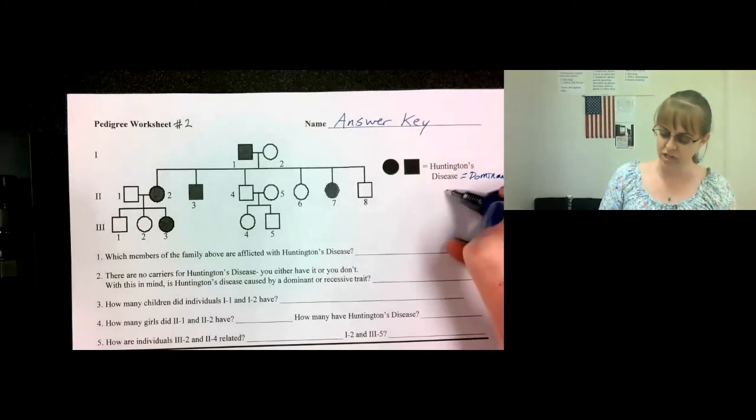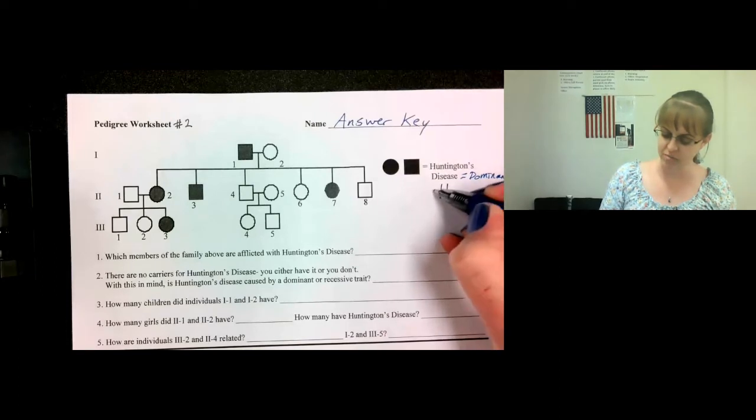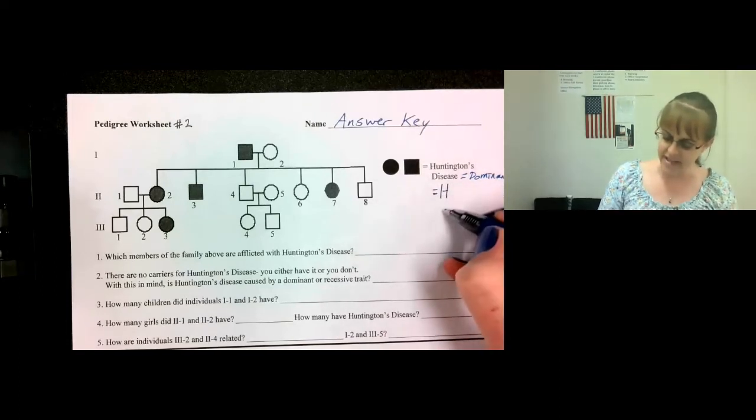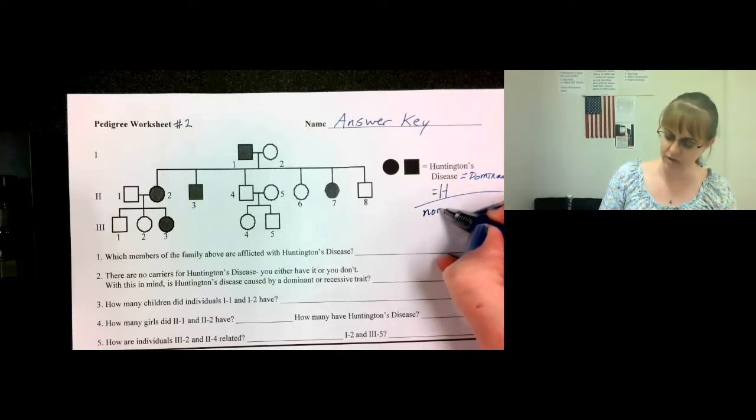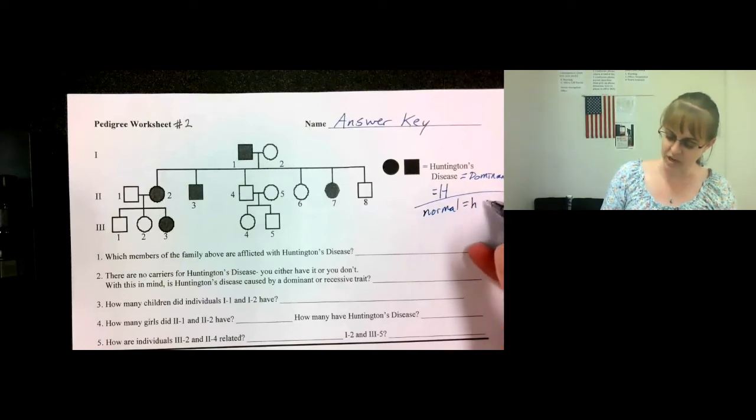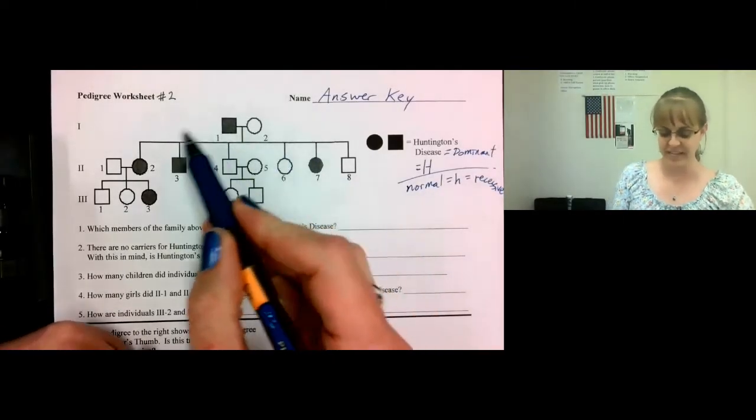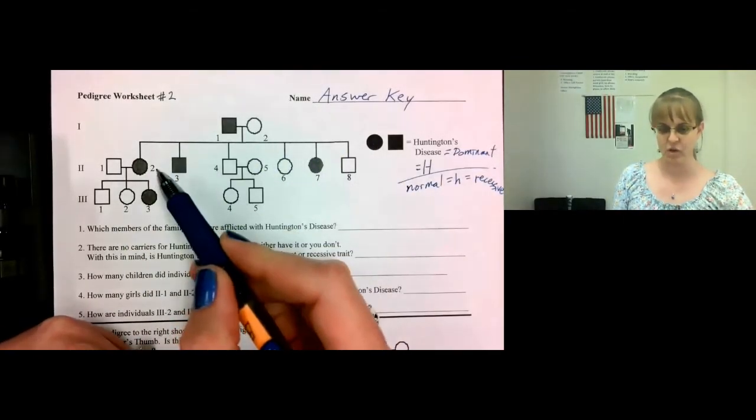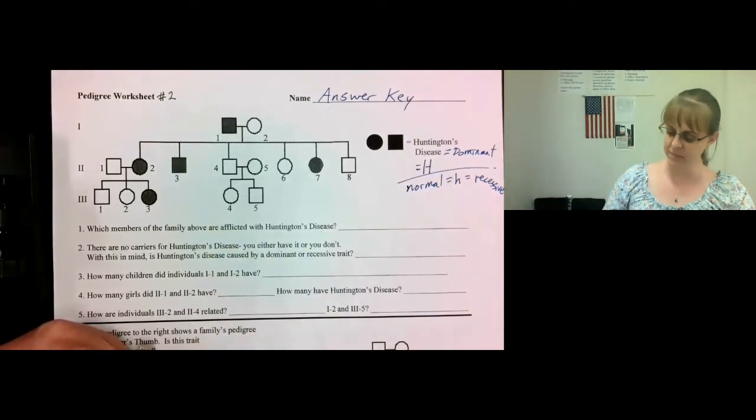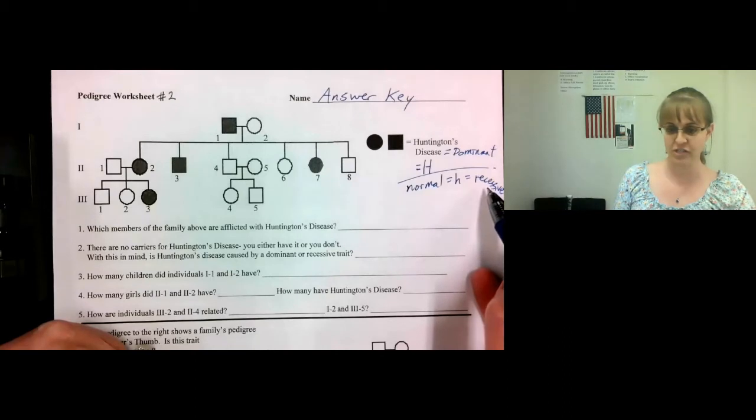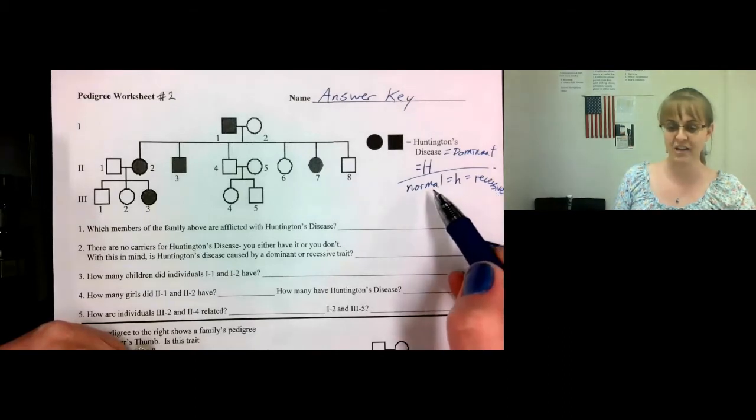So we are going to use a capital H to represent Huntington's. And lowercase h, without Huntington's disease, is going to be lower, and that's recessive. Now go through and label each person with their genotype. First of all, it's easiest to do the recessive ones first.